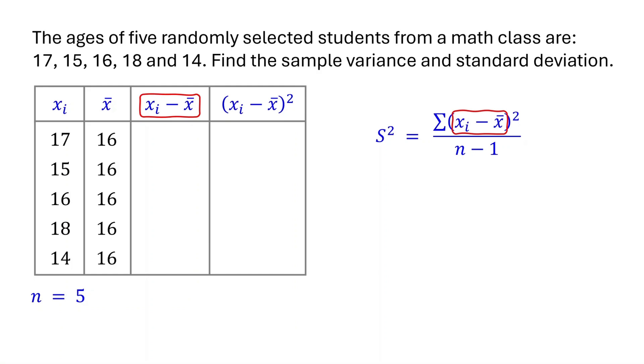Next, subtract the mean from each data point. 17 minus 16 is 1. 15 minus 16 is negative 1. 16 minus 16 is 0. 18 minus 16 is 2. 14 minus 16 is negative 2.